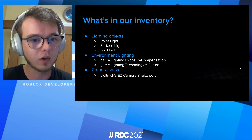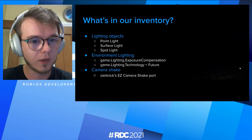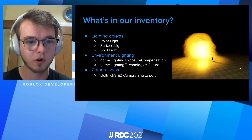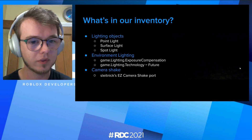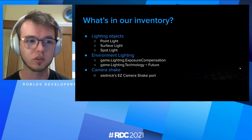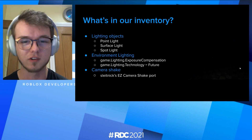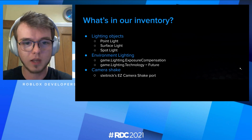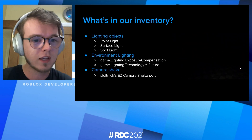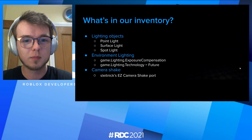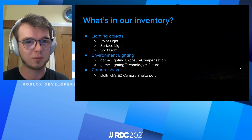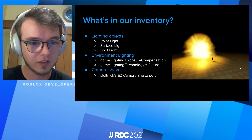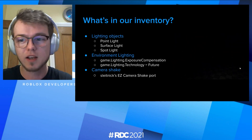We've got more. We have lighting objects — point lights, surface lights, and spotlights. And then we have environment lighting. We can actually change the environment lighting for our player when visual effects happen through programming. A notable example is exposure compensation — if you change it on the client side, you can blow out the player's screen if they're really close to the epicenter of an explosion. Future lighting is also worth noting because it allows really great shadows when you use lights for your visual effects. And then there's camera shake — it's not used often on Roblox, but it's great for adding that extra level of immersion. If an explosion happens and nothing happens to the player, it's a disconnect. Slightnik ported easy camera shake on Roblox, so you can find that on the dev forum.